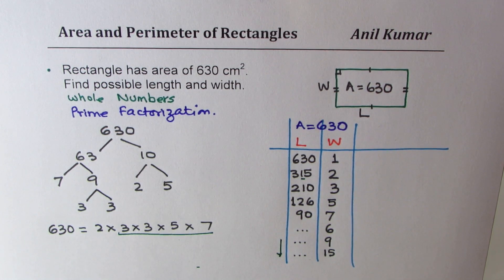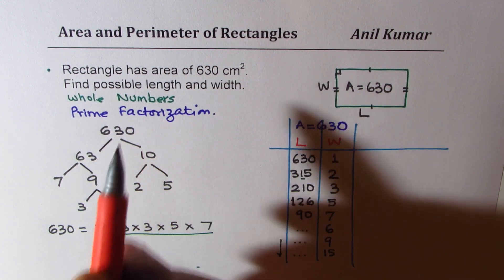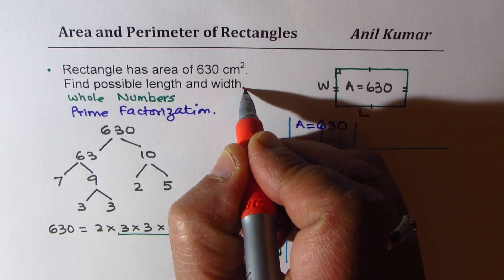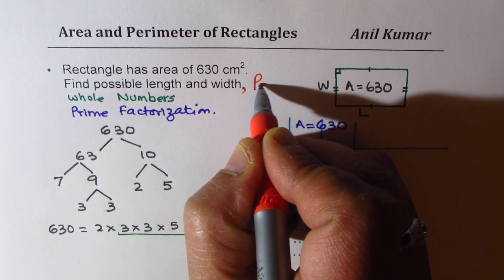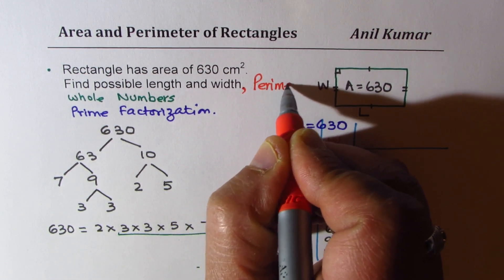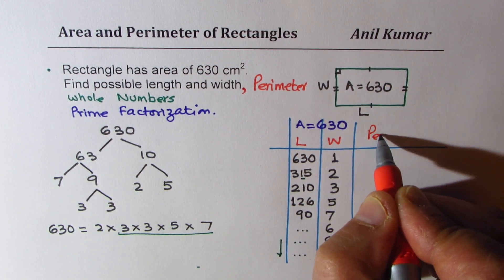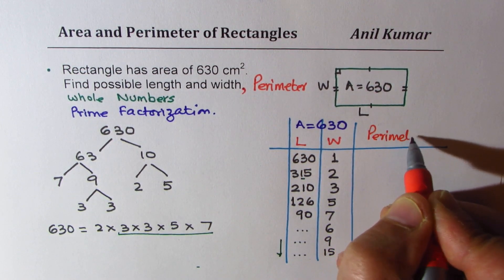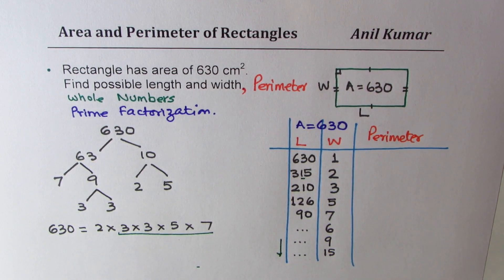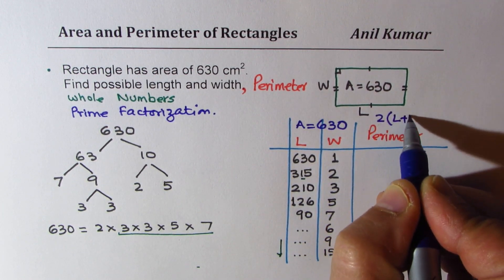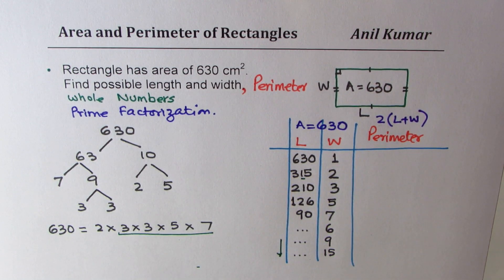So I leave it here, and I like you to find this. Now sometimes the question is extended. Let's extend this. Find possible length and width, and then I'm adding perimeter. So if that is part of your question, then add one more column for perimeter, and you know what perimeter is. Perimeter is twice length plus width. So perimeter is 2 times length plus width.